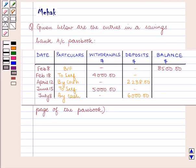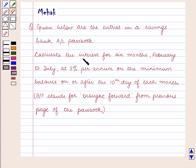Hello and welcome to the session. In this session we are going to discuss the following question: Given below are the entries in a savings bank account passbook. Calculate the interest for 6 months February to July at 3% per annum on the minimum balance on or after the 10th day of each month. B/F stands for brought forward from previous page of the passbook.